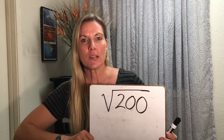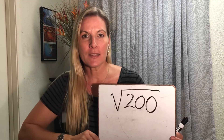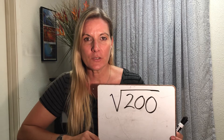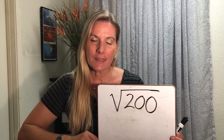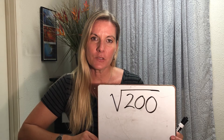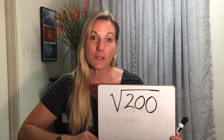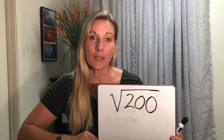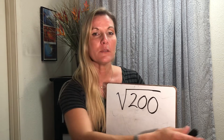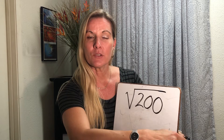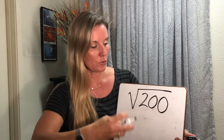So if you were trying to simplify the square root of 200, you want to think about the factors of 200 with the greatest perfect square. And so in this case, it would be 100 times 2.